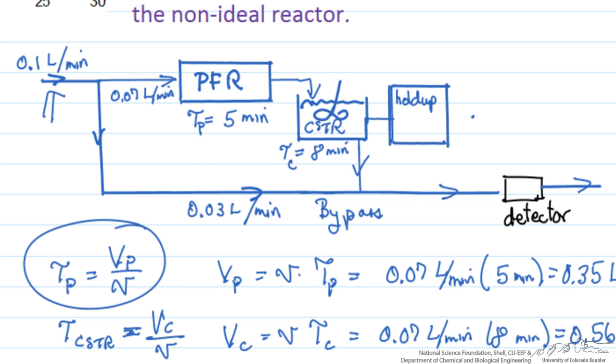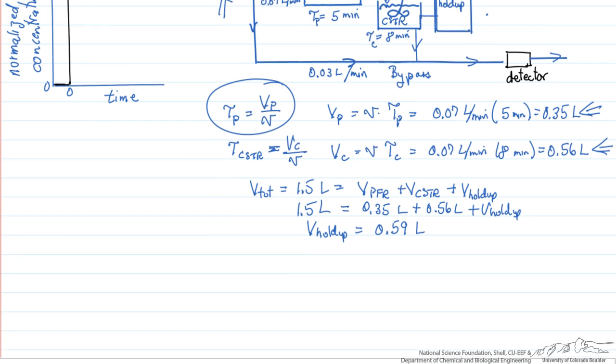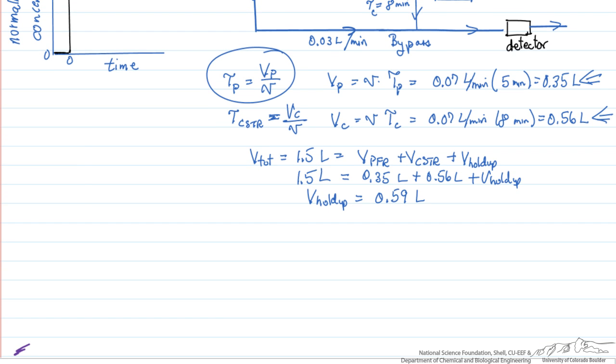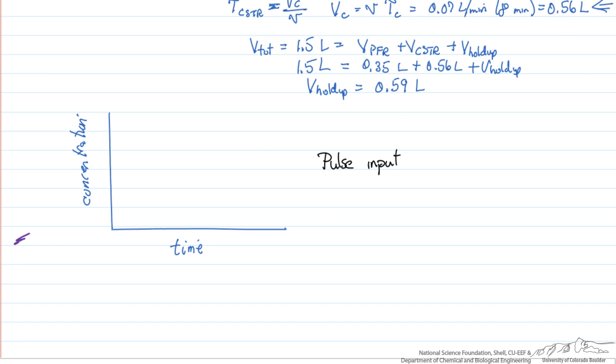And so we won't do the numbers for this, we'll just look at what the behavior would be. So for a pulse input at time equals 0, what we would see then is 30% of this pulse immediately appearing at the output, and the area, ideal pulse with infinite height and infinitesimal width, but the area would be proportional to 30% of the total amount of the pulse.